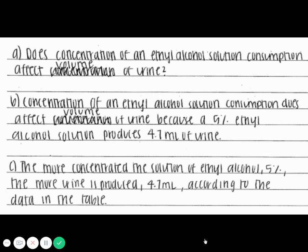Concentration of an ethyl alcohol solution consumption does affect volume of urine because a 5% ethyl alcohol solution produces 4.7 milliliters of urine. So I'm not sure if that's a hypothesis, is it? I don't think really that's a hypothesis.